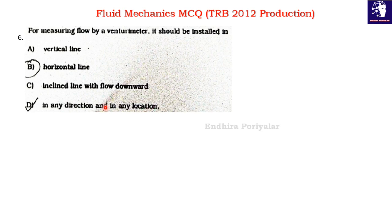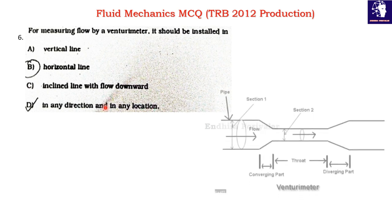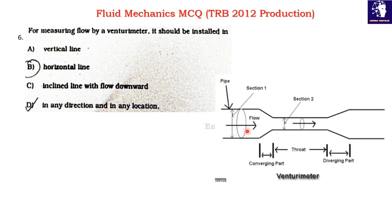Question 7: For measuring flow using a venturimeter, it should be installed — vertical, horizontal, inclined, or in any direction at any location. A venturimeter can measure flow in any direction at any location. The correct answer is: in any direction at any location.